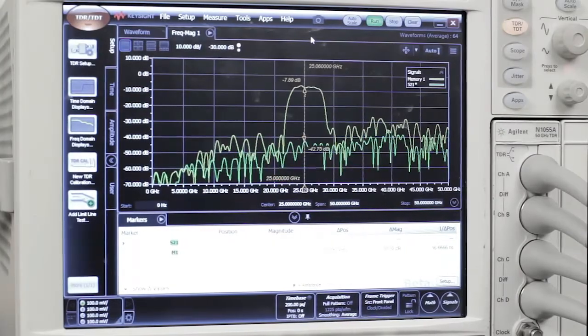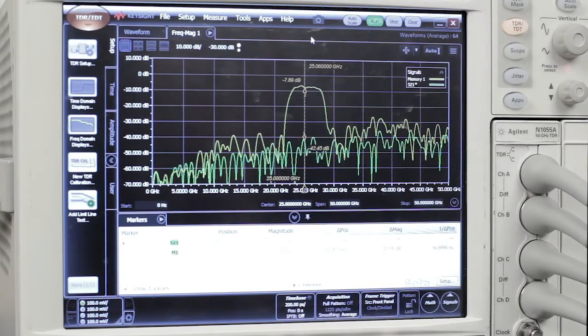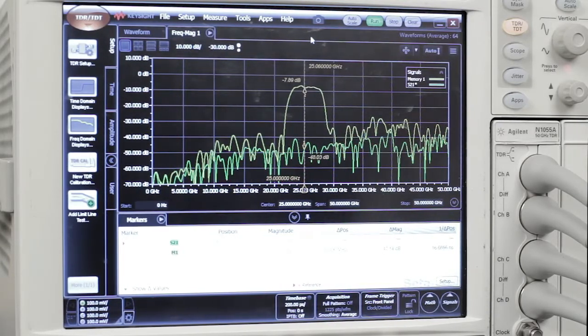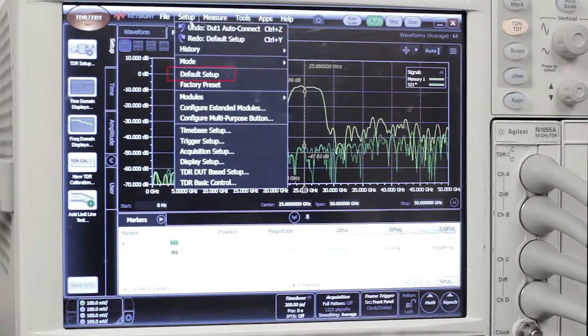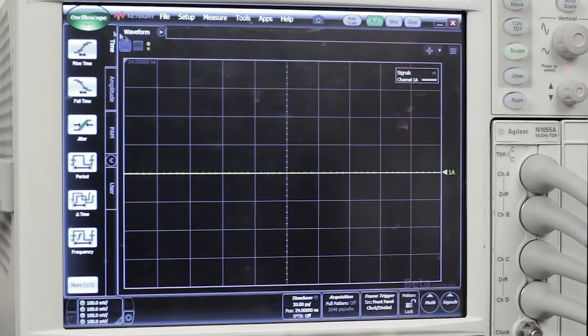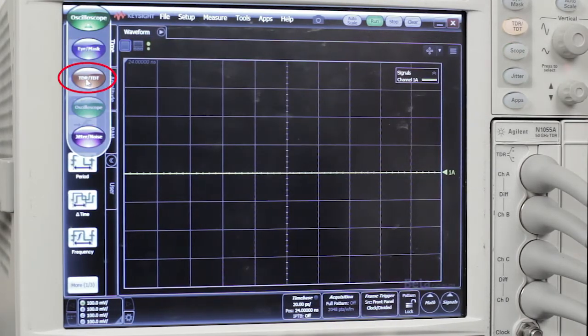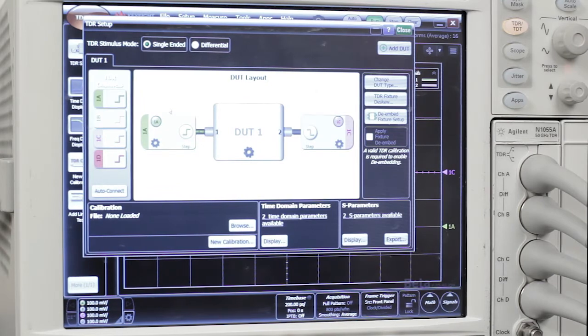The first step in our process today is to set up the TDR for a two-port measurement and then perform a TDR calibration at the reference plane, which is the connector on the remote head. So the best way to start is just with an instrument default setup. Next we'll go into TDR mode and we will choose a two-port DUT since that's what our device is that we're going to measure today.